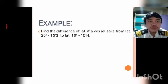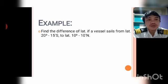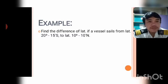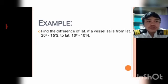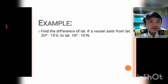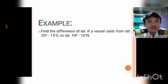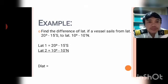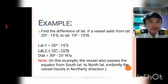Next, find the difference of latitude if a vessel sails from latitude 20 degrees 15 minutes south to latitude 10 degrees 10 minutes north. Both positions are in different hemispheres — the place of origin is in the southern hemisphere and the place of arrival is in the northern hemisphere. In this case we should add to determine the difference of latitude. The direction is from south to north, so it is northerly, giving an answer of 30 degrees 25 minutes north.